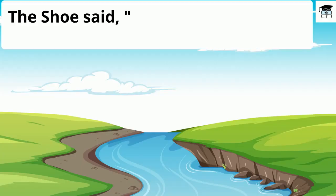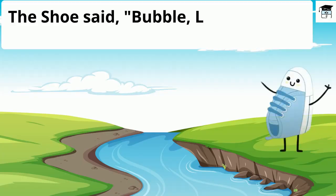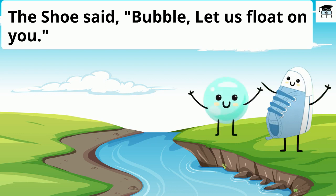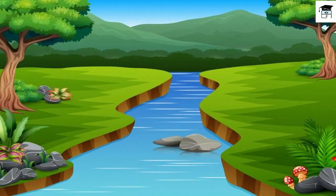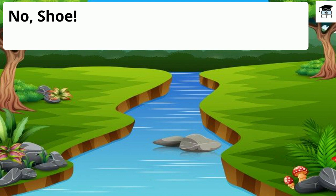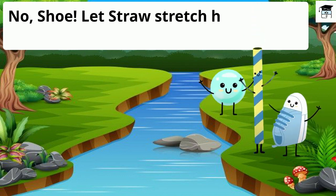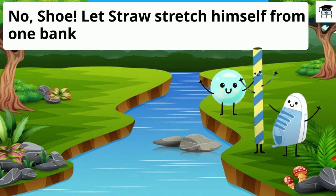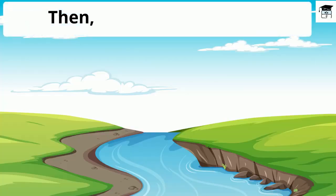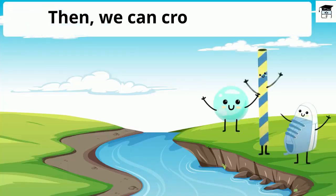The shoe said, 'Bubble, let us float on you.' Bubble replied, 'No, shoe. Let straw stretch himself from one bank to the other. Then we can cross the river.'